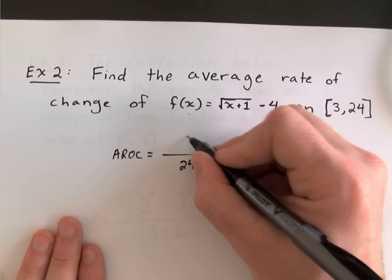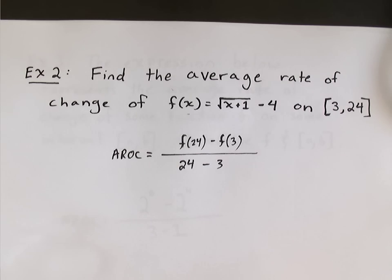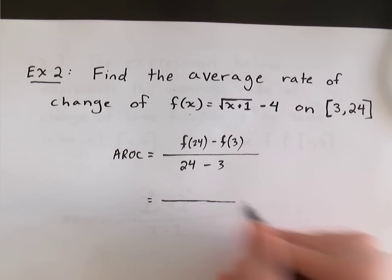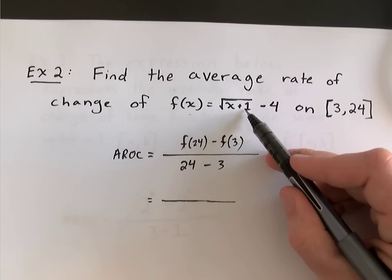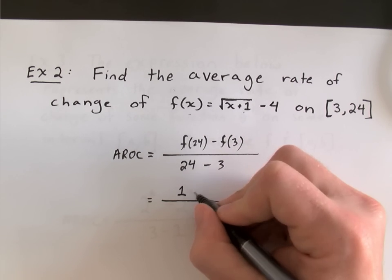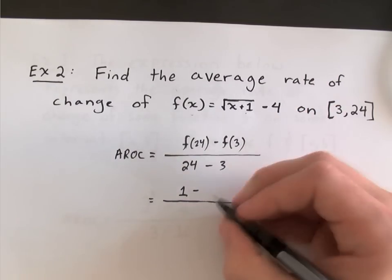Change in y will be f(24) minus f(3). So, I'm plugging 24 into that function and evaluating, plugging 3 into that function and evaluating. So, the square root of 24 plus 1 is the square root of 25 minus 4. This gives us 1. The square root of 3 plus 1 is the square root of 4, which is 2. 2 minus 4 is negative 2.